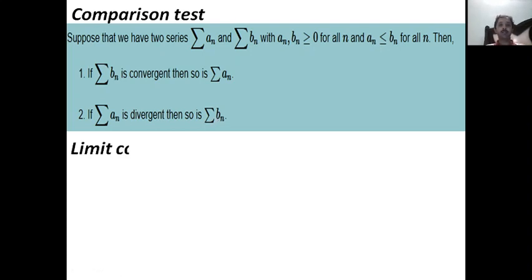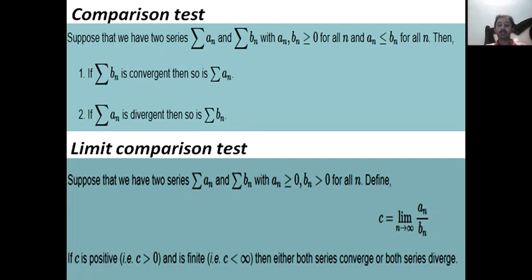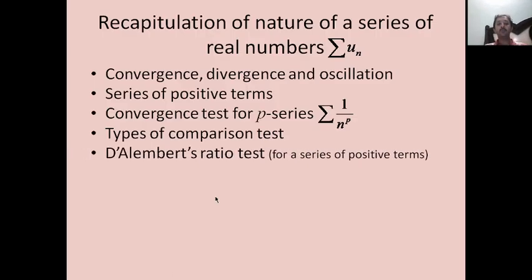The second comparison test is also known as the limit comparison test. It states: suppose sigma a_n and sigma b_n are series of positive terms, and let c = lim(n→∞) a_n / b_n. If this limiting value c is positive and finite, then either both series converge or both diverge — that is, both series behave alike.